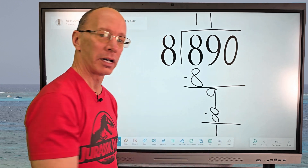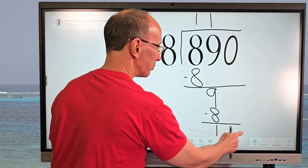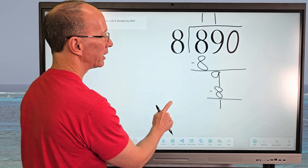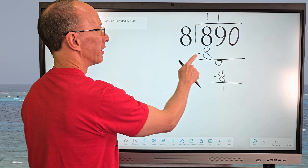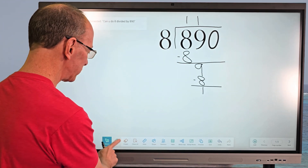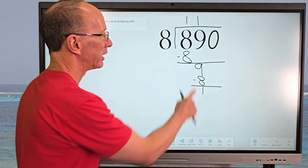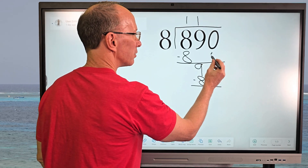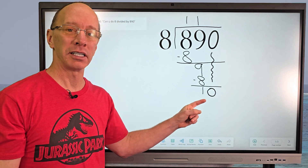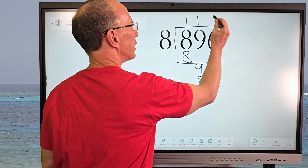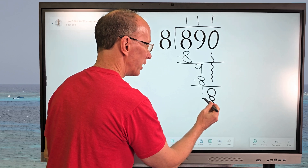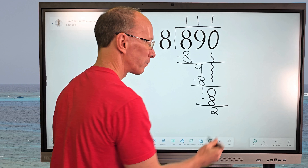Then I subtract, which gives me 1. Division problems can get pretty big on the paper — that's the nice thing about working with a whiteboard. Our next step is to bring the next number straight down, which is the 0. I draw a line down and put the 0 right here. How many times does 8 go into 10? One time. So I put the 1 up here, and 1 times 8 equals 8. Now I subtract and I have a 2.